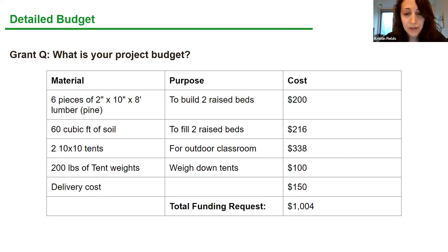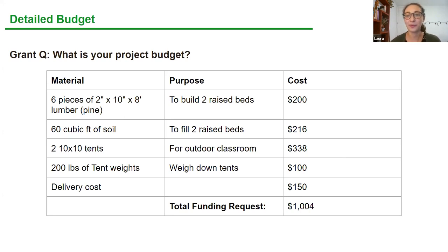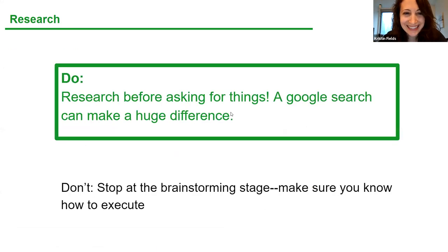Make sure everything adds up and your funding request matches your budget total. We've seen grants where people list out costs and then put a total funding request that doesn't match — make sure you're adding up correctly and asking for what you have on your budget.